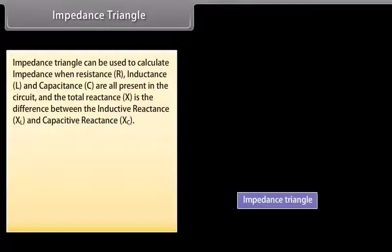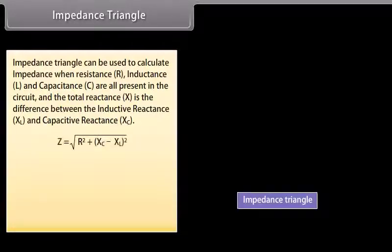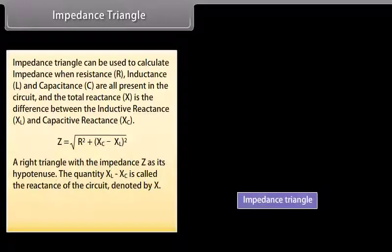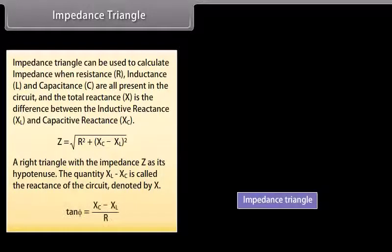Impedance triangle: The impedance triangle is used to calculate impedance when resistance, inductance, and capacitance are all present. The total reactance is the difference between inductive and capacitive reactance: Z = √(R² + (XC − XL)²). The quantity XL − XC is called the reactance X of the circuit. tan φ = (XC − XL) / R.